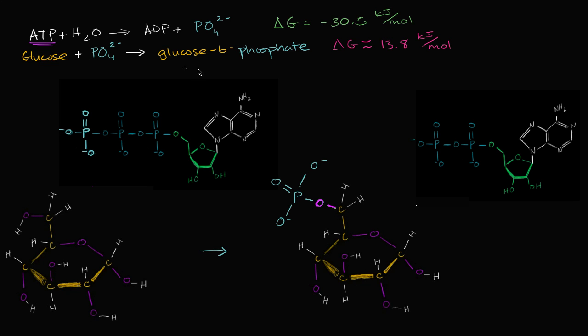Now unfortunately, this reaction of taking glucose and phosphorylating it requires energy. It's endergonic. It's not going to happen spontaneously. It has a positive delta G. It is endergonic.